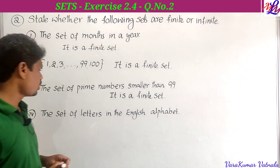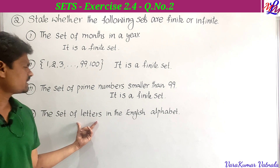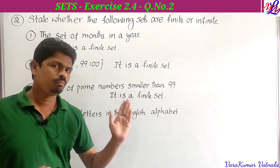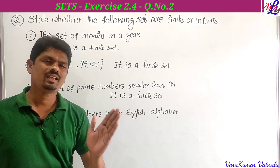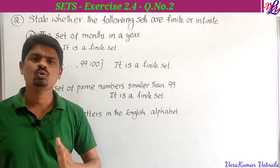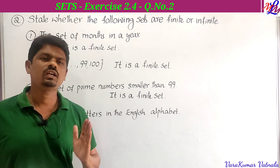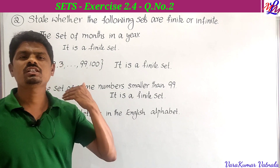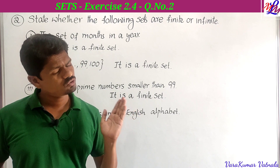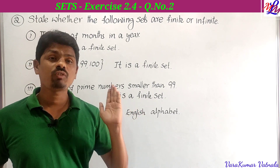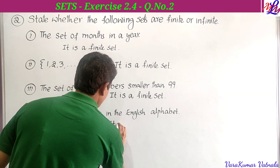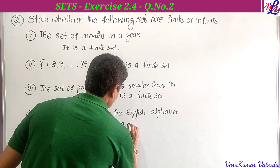The fourth bit: the set of letters in the English alphabet — A, B, C, D, E, F, G, H, I, J, K, L, M, N, O, P, Q, R, S, T, U, V, W, X, Y, Z. There are 26 letters, which are countable, so it is also a finite set.